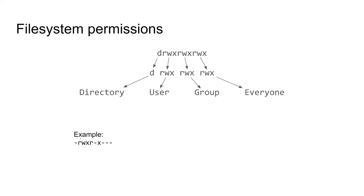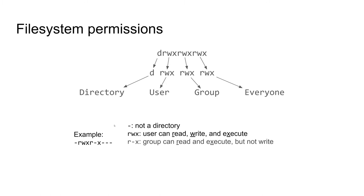As an example, let's say we see dash-rwx-r-x-dash-dash-dash. The first dash means it's a regular file — not a directory or special link. The first rwx means the user can read, write, and execute. The second set r-x means group members can read and execute but can't write — they can peek into the directory but can't put anything in or take anything out. The final dash-dash-dash means everybody else has no permissions — they can't look in, change into, or modify the directory at all.